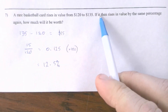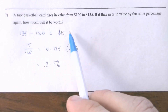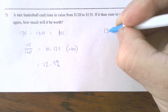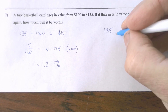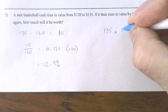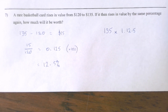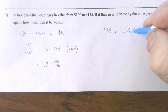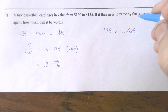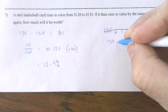If it then rises in value by the same percentage again, how much will it be worth? It's now worth $135, and we want to know what a 12.5% increase on that is. So I'm going to multiply $135 by 112.5% — that's 1.125 in decimal form — to find the new increased value.